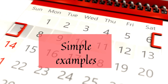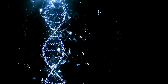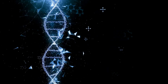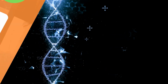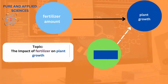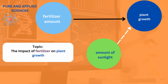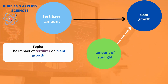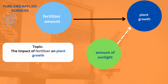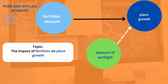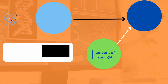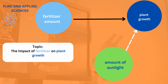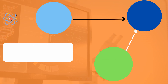Now that you have identified the different types of variables, it's time to classify them depending on your research questions. For example, you may study the influence of fertilizer on plant growth in a science experiment. The amount of fertilizer is the independent variable, plant growth is the dependent variable, and the amount of sunlight each plant receives might be a control variable.